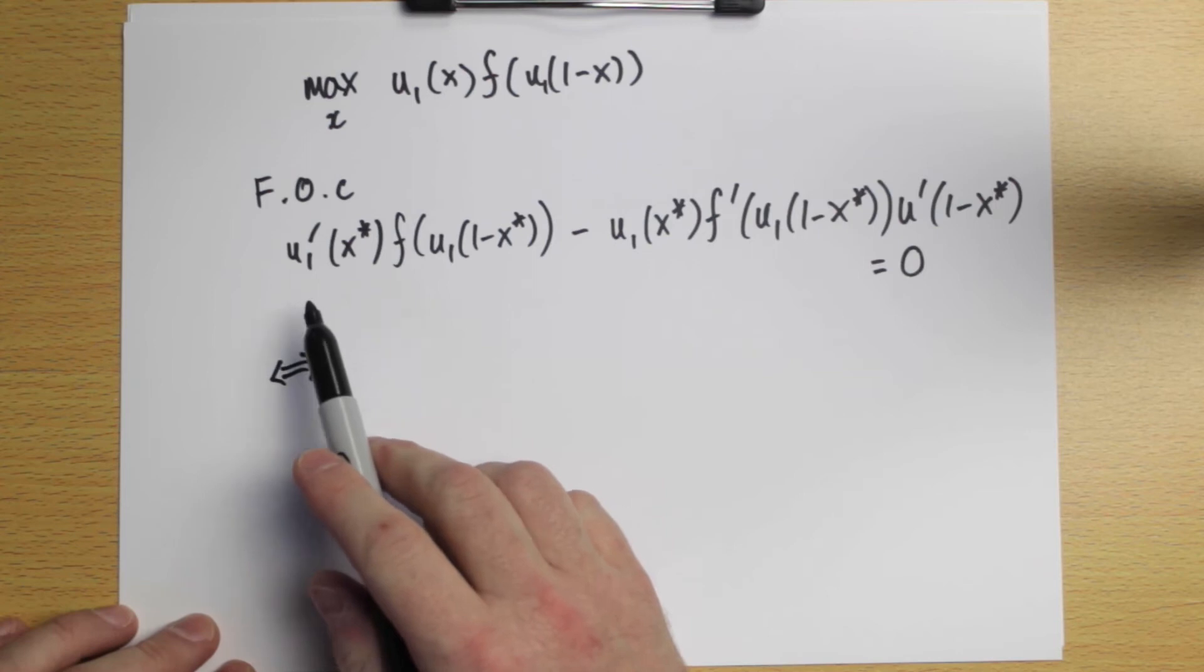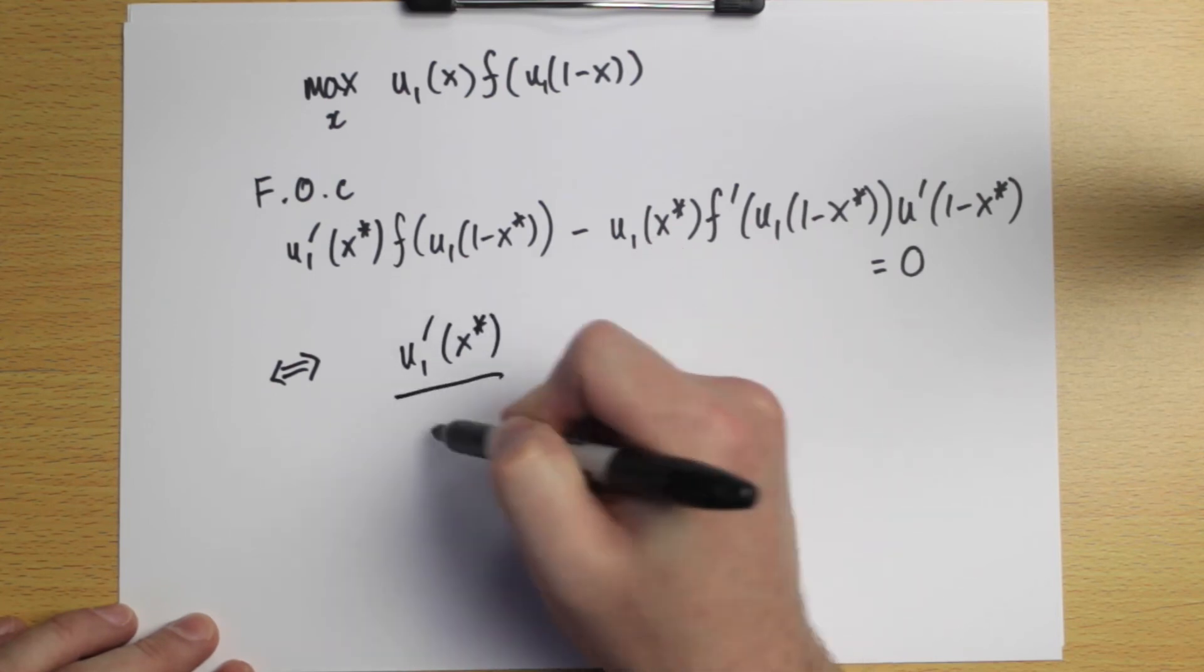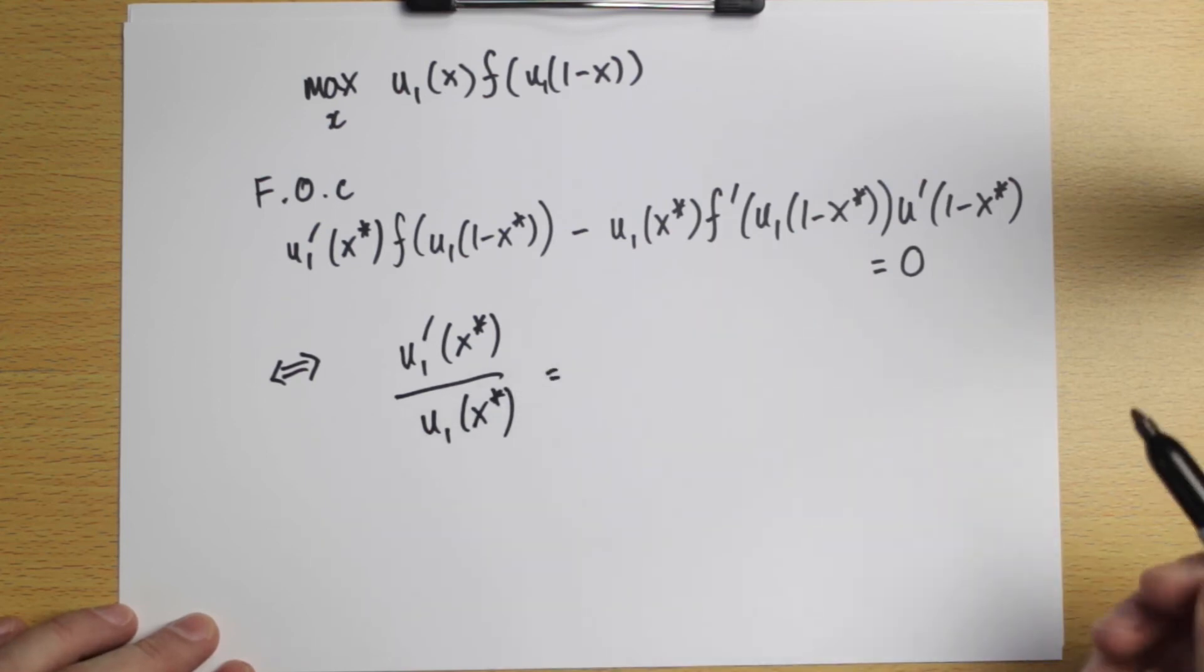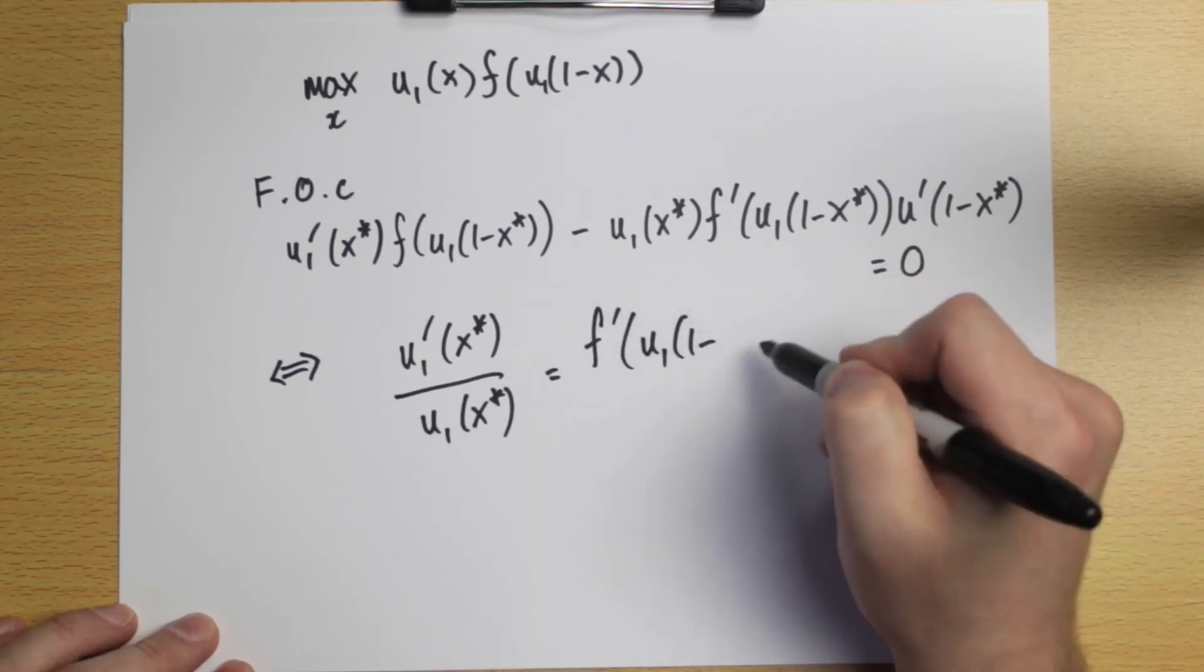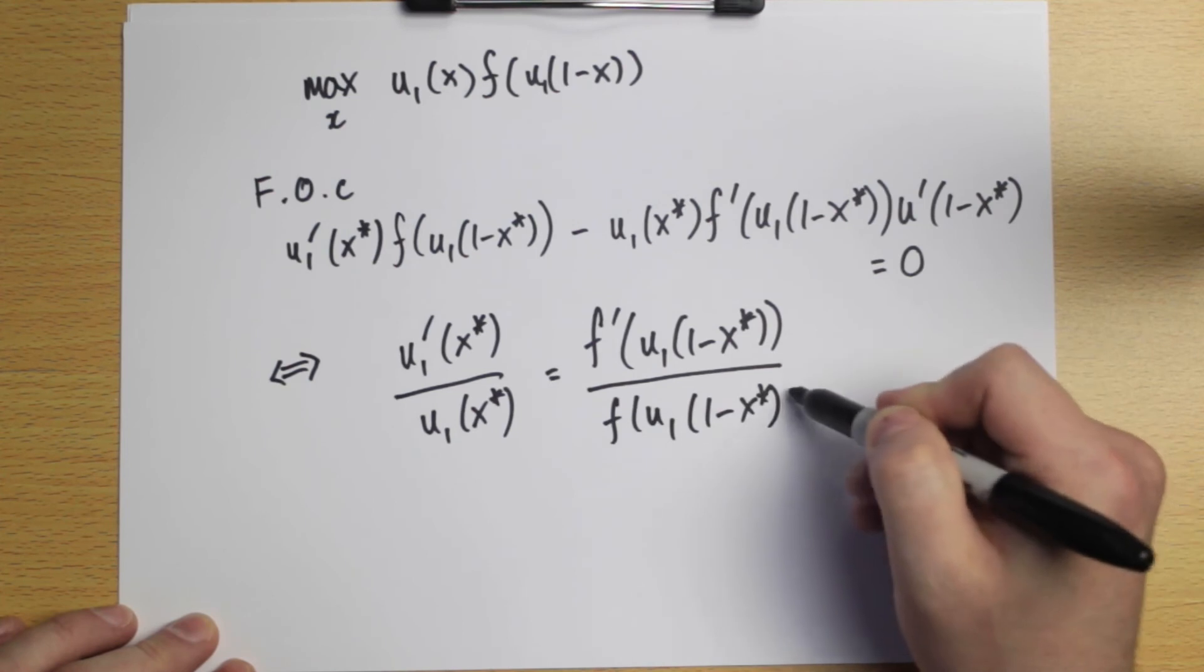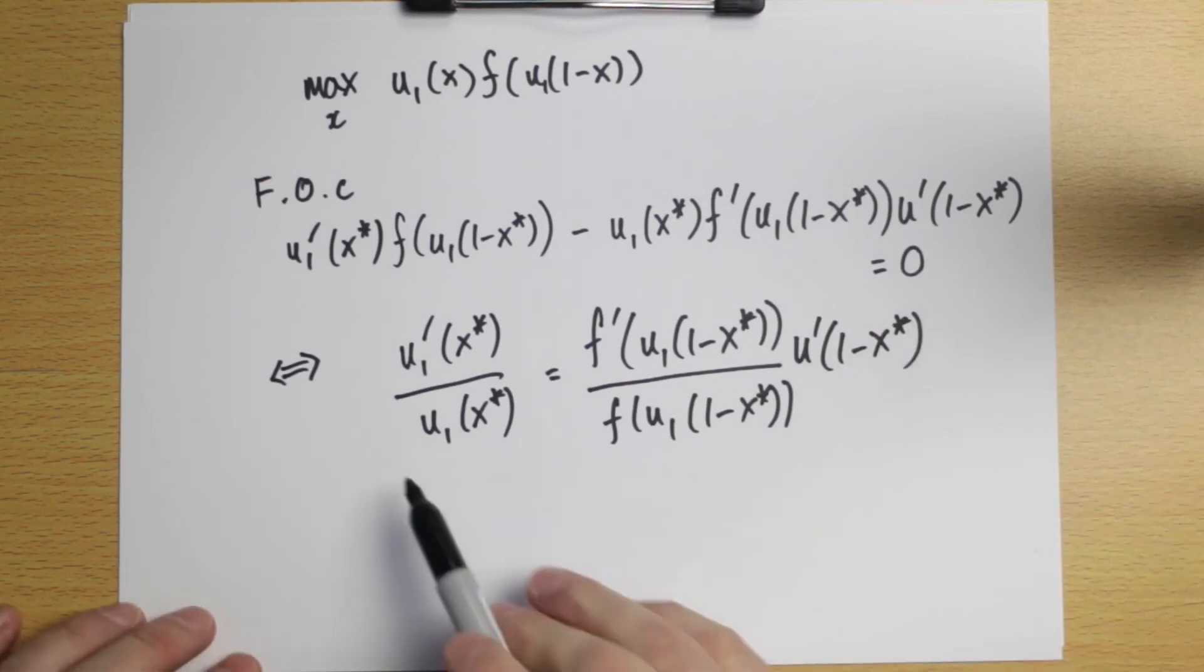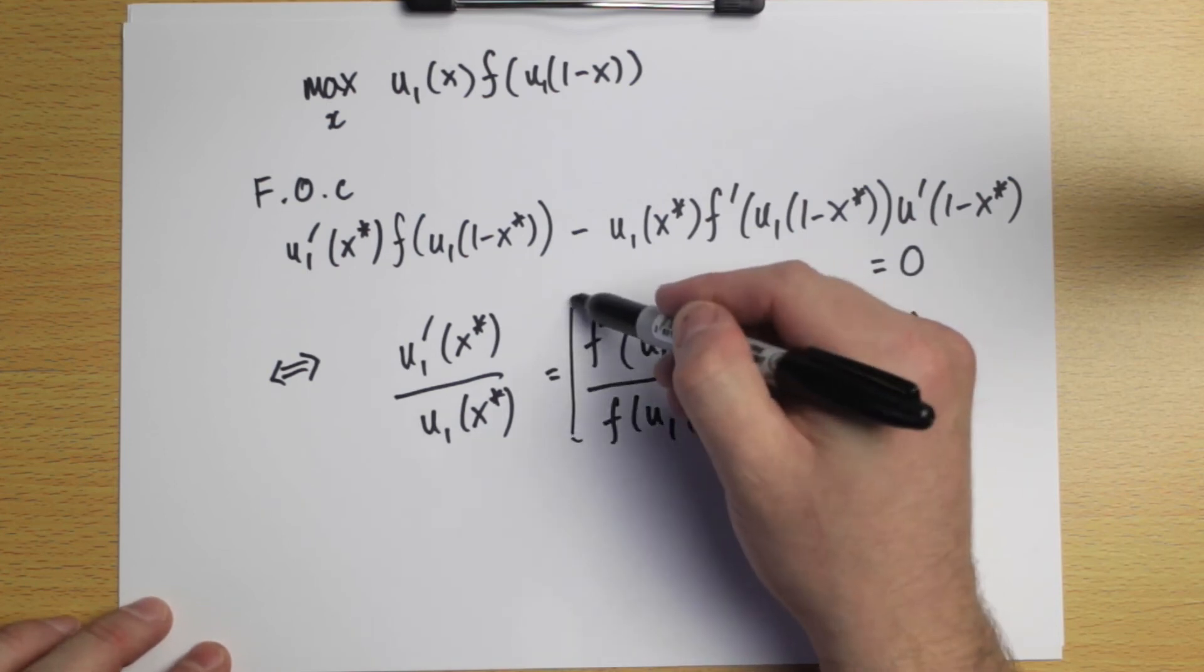So let's see if we can rearrange this expression and clean it up a little. I'm going to get player one's utility of X star on this side. So I get the marginal utility of X star divided by the utility of X star must equal a similar expression for player two, the marginal utility using this composed function multiplied by this. So this is a condition that must hold when X star is the amount the Nash bargaining solution is assigning to player one.